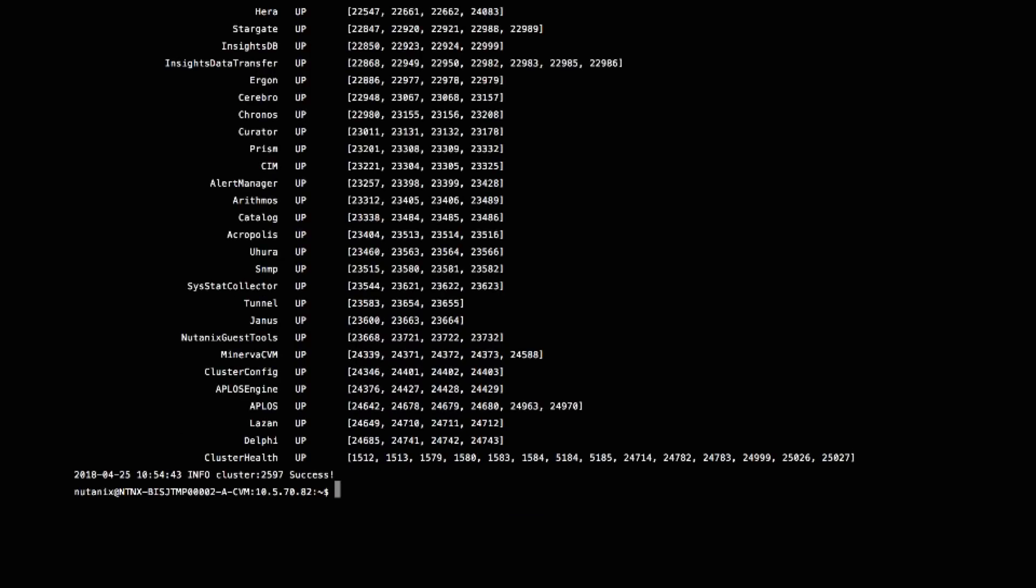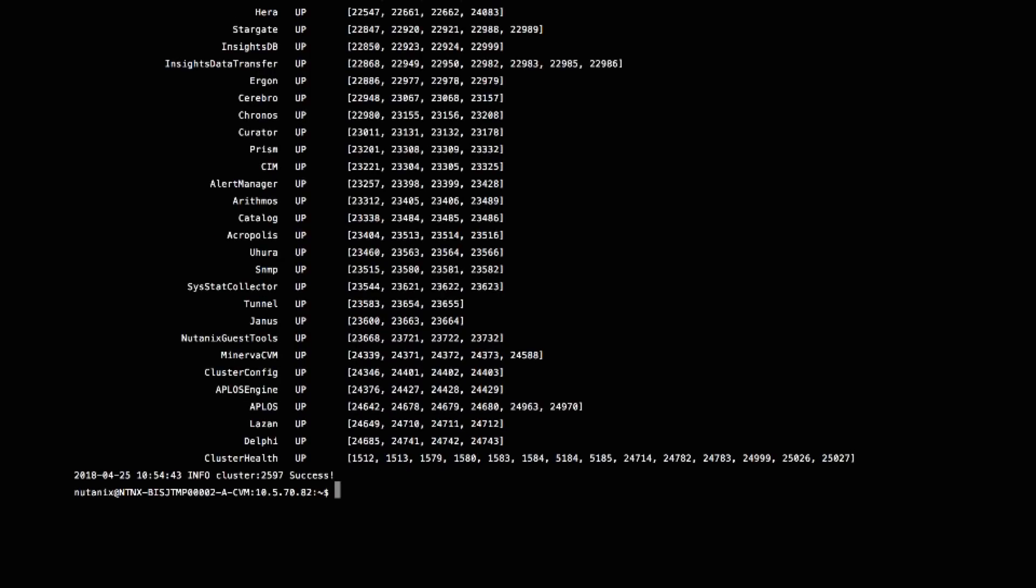You can see all the services on both nodes are up. Please note that it will take significant time for the data to get replicated onto node B's disks. So once that is done, the leader will be reset and you should see the update on the witness VM. So that is a demo of how the feature works.